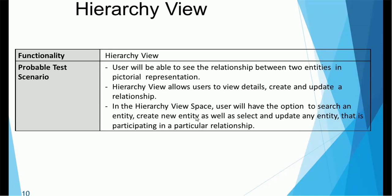Another area to test in the IDD application is the hierarchy view, which is a special and interesting view with various functionalities: creating relationships, adding parent-child relationships, viewing in different formats, applying filters, and — if multiple hierarchies are configured — filtering by hierarchy type. You should also verify that color styles and images display correctly. The hierarchy view allows users to see relationships between entities in a pictorial representation. Users can view details, create and update relationships, search an entity, create a new entity, or select and update any entity participating in a given relationship.